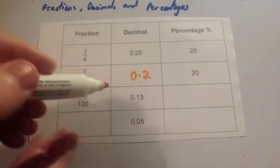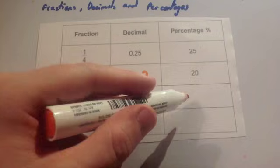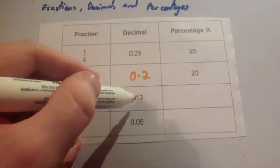Okay, next one. Again, I would probably look at the decimal. To go from a decimal to a percentage is quite easy. You just times 100, so move the decimal place twice, 1, 2, and you get 13%.